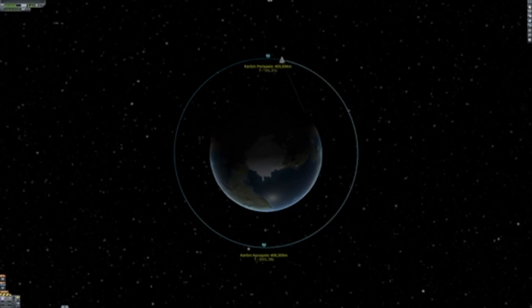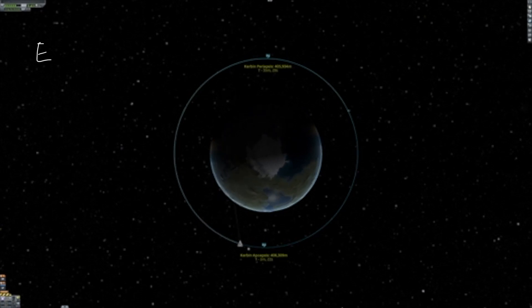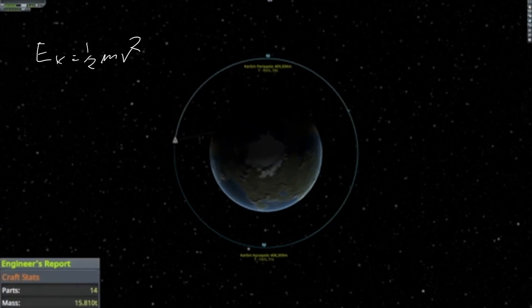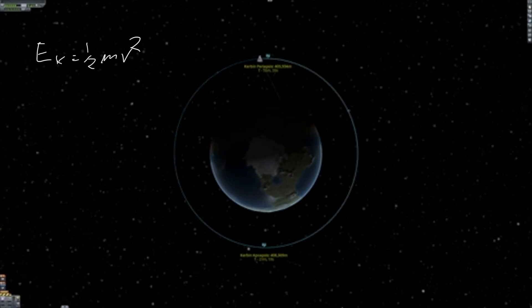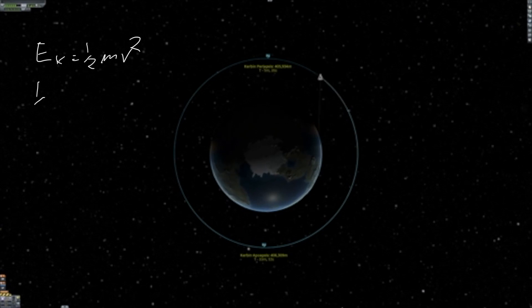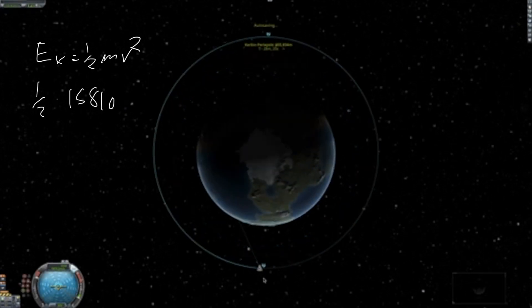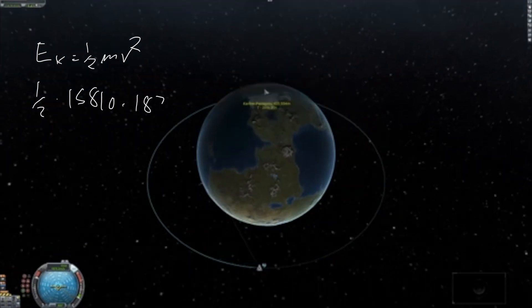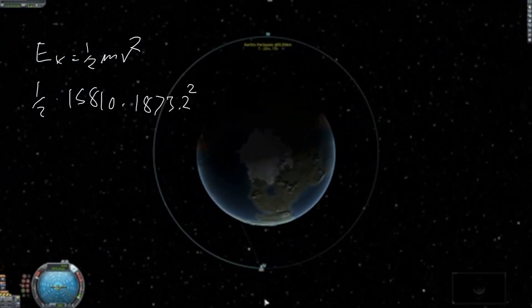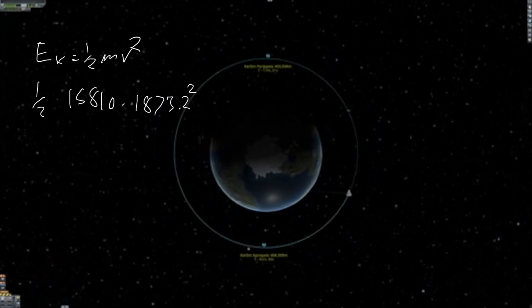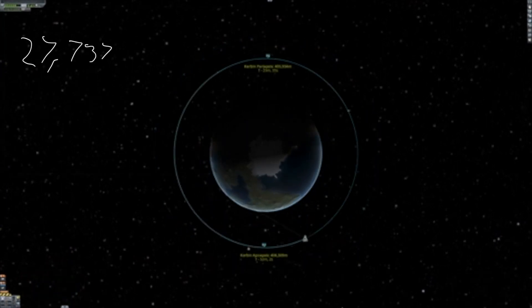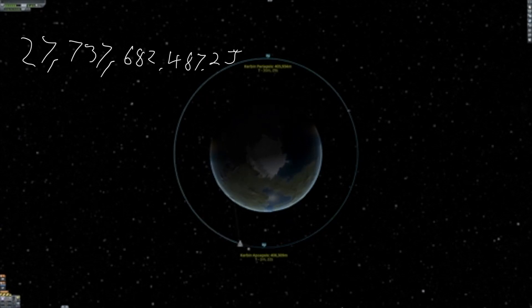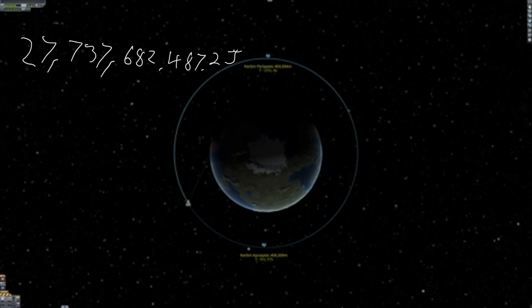We can actually calculate the energy the craft has in this orbit. First we can get kinetic energy. It's defined as Ek equals ½ mv squared. So we need mass and speed. We can see that the craft weighs 15.81 tons. To get kilograms, we multiply that number by 1,000 and get 15,810. Now for the speed, we can see here that our speed is 1,873.2 meters per second at the apoapsis. Now we can calculate that the craft's energy kinetic is 27,737,682,487.2 joules.